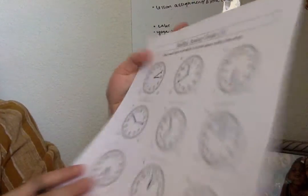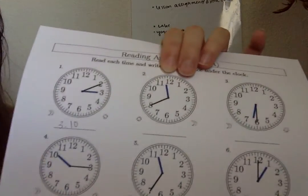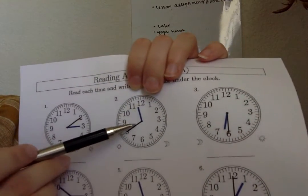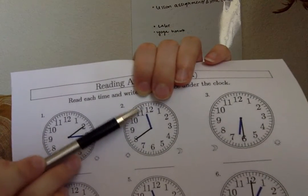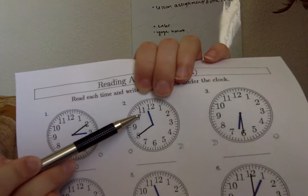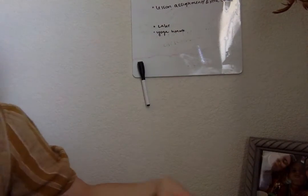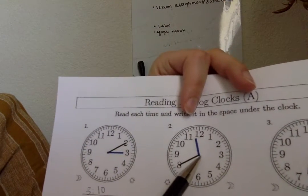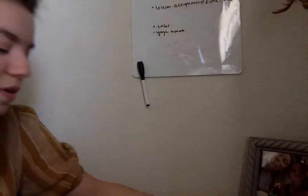We're gonna move on to our second clock. When we're doing our time we're always gonna look for that hour — that small hand first. So we have the blue hand. This one's a little tricky, but since it is between eleven and twelve and it's not yet on that twelve mark, we're always gonna round down to the lower number. So that is gonna be eleven — we're gonna write eleven for the hour. Our long hand points to the eight, and we know that is forty. So we have eleven forty for that second clock.